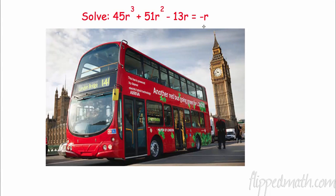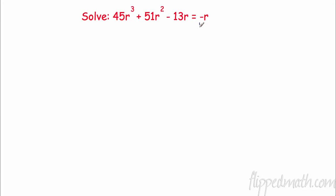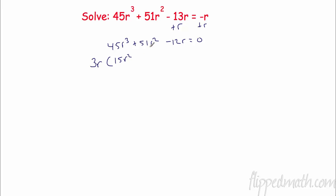Double decker bus — love riding up top in London. All right, for this one I need to move the r over, so I'm adding r to both sides. Now I have 45r to the third plus 51r squared minus 12r equals zero. My smallest number is 12. Does 12 go into 51? No. 6? No. 4? No. 3 goes into 51 seventeen times and into 45 as well. So I can take out a 3, and I have an r in every term, so I take out 3r. That gives me 3r times (15r squared plus 17r minus 4) equals zero.